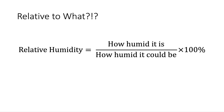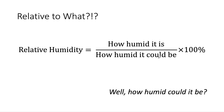That should prompt us to ask: relative to what? If something is relative to something, that always means you're taking a ratio — taking something and dividing by the total size to get a relative number. Conceptually, relative humidity must equal the ratio of how humid it currently is divided by how humid it could be, times 100%. That begs the question: how humid could it be, and how would we know that?